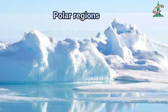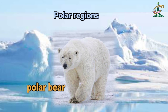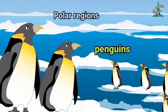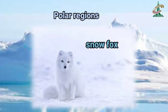Some animals live in very cold places، اور ان cold places کو ہم polar regions کہتے ہیں۔ Examples of animals are polar bear, penguins, snow fox, etc. تو polar regions ان کی habitat کہلائے گی۔